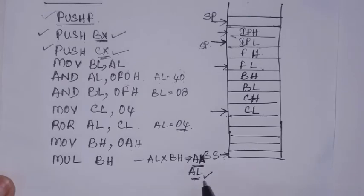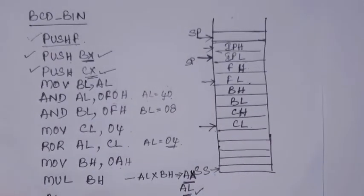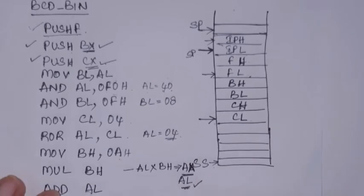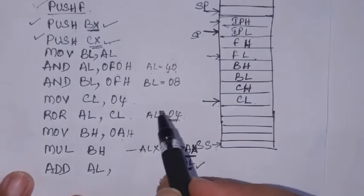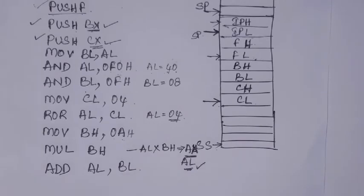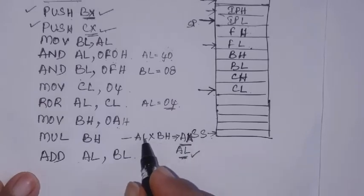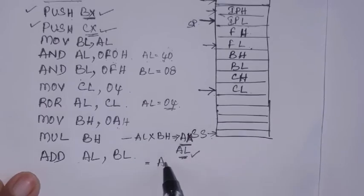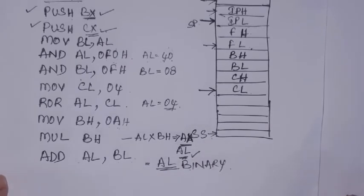After multiplication the result is in AL. The next step is to add 8 to this. ADD AL, BL — where BL holds 08H. After this instruction, AL contains the multiplication result added with BL 08. So AL now contains the binary equivalent of the given BCD input.